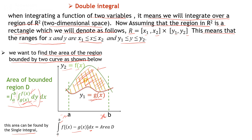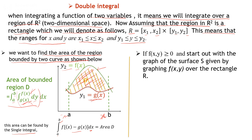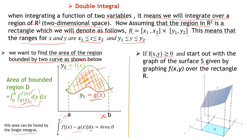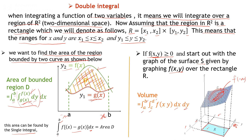If we want to evaluate the volume, suppose we take a function f(x, y) ≥ 0. The graph of f(x, y) is a surface. Over a rectangle R, if we integrate the surface on the region where x goes from a to b and y goes from c to d — integrating that surface over that region — we obtain the volume. So integrating the surface f(x, y) over the limits a to b for x and c to d for y gives the volume.